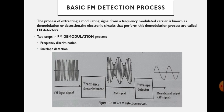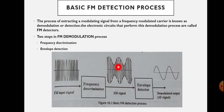The frequency discrimination process is shown here. The FM input signal is given to this frequency discriminator, and the output of the frequency discriminator is an amplitude modulated signal. The envelope of the information signal is obtained, and we can recover the original information signal from the amplitude modulated signal using the envelope detector, which is the AM detector circuit. So FM is first converted into an AM signal, then AM is converted into the original modulating signal, using the frequency discriminator followed by the envelope detector.